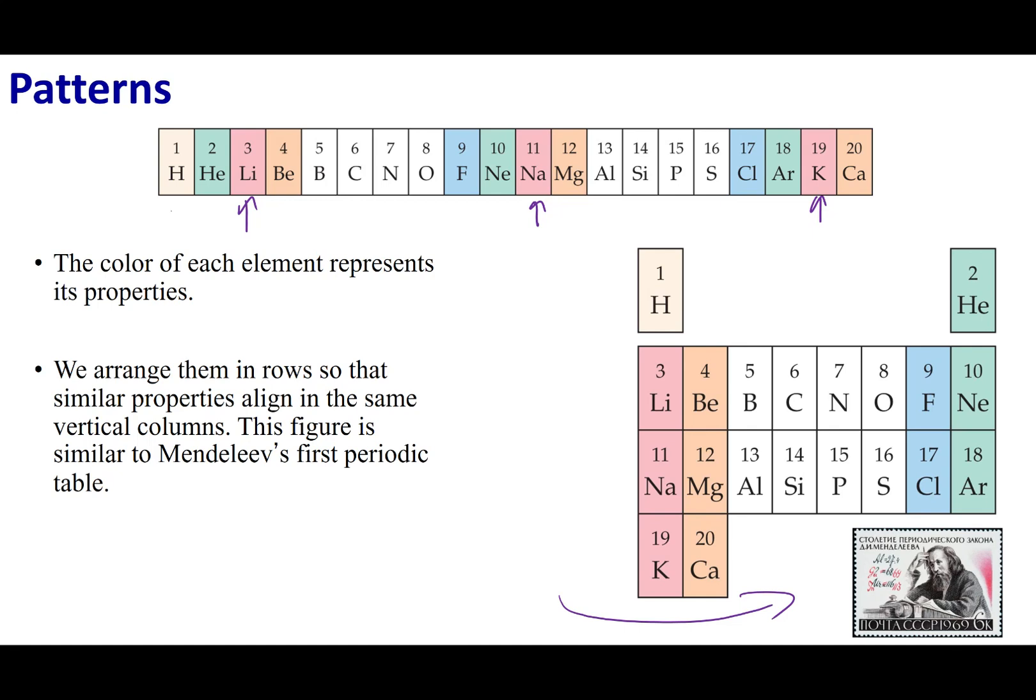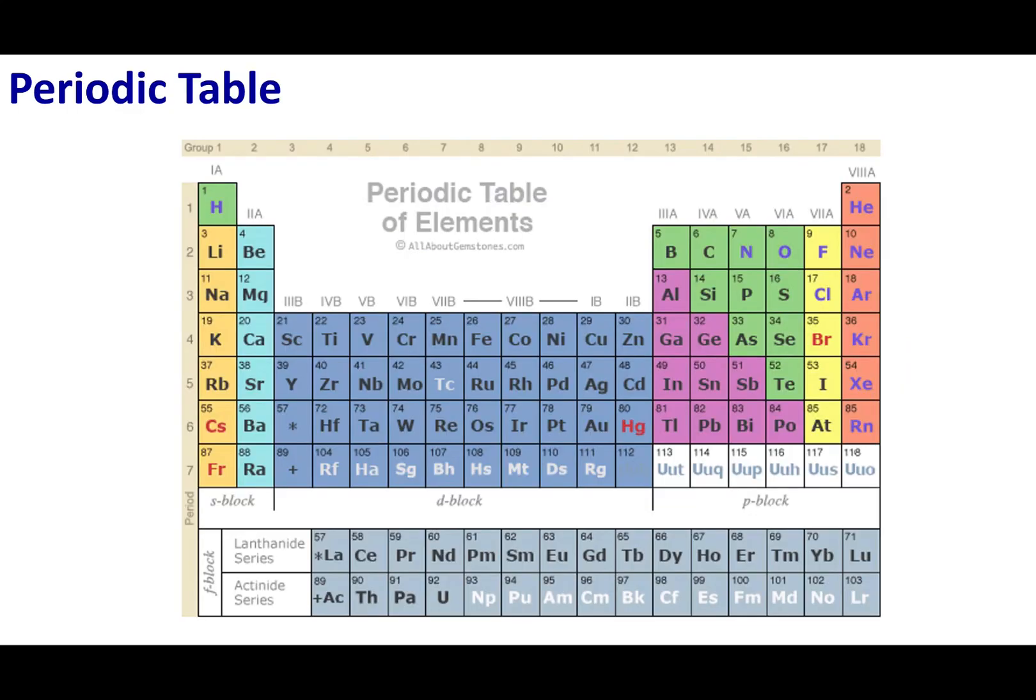And so he took all his cards, lined them up by weight, and he found there was this repeating pattern. He saw that after about eight elements the reactivities repeated themselves. Based on this initial 1 through 20, he started to construct what we now know as the periodic table. He arranged the elements based on their chemical reactivity and their atomic weight.